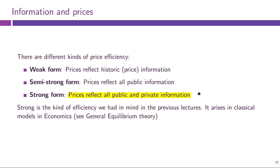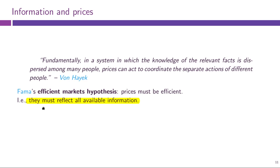The strong form might seem ridiculous, but it is actually the kind of efficiency that arises in classical economic models — such as the Edgeworth box, Arrow-Debreu Securities, or Radner Equilibrium. The efficient markets hypothesis says that prices must be efficient in at least some of these senses, but it is often understood as prices must be strong form efficient. Let us discuss the problems with this hypothesis.